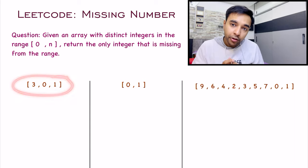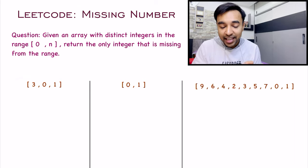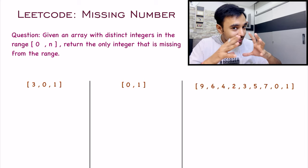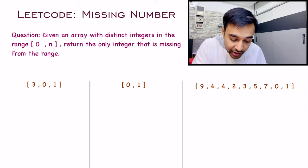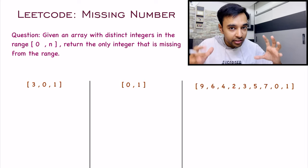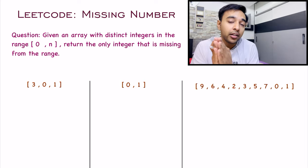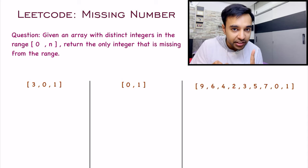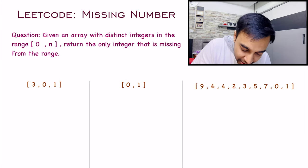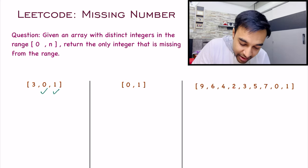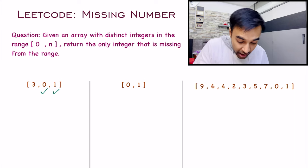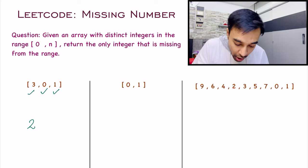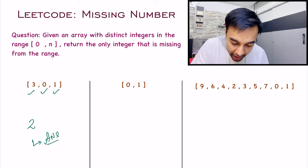For our first test case, you can see that this array has three elements, so the value of n equals 3. That means the range should be 0 to 3, so you are expecting 0, 1, 2, and 3. You can see that one number is missing — 0 exists, 1 exists, but you cannot find a 2. So 2 will be your answer, because 3 also exists.